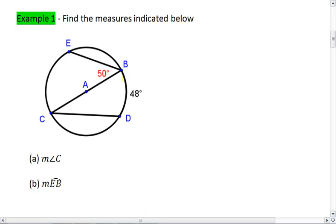Okay, we see first of all we're given that arc BD is 48 degrees, meaning angle C is half of that, is 24 degrees.